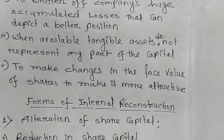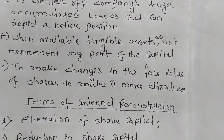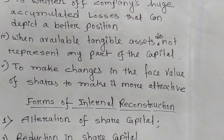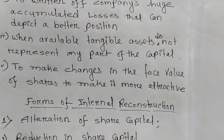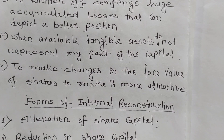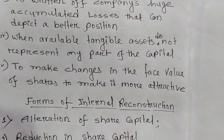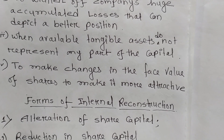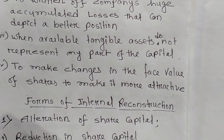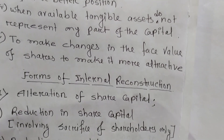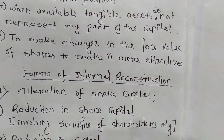The third situation is when the available tangible assets do not represent any part of the capital. Tangible assets are those which can be touched, seen, and stored. If such tangible assets do not represent the whole capital, then to get a return on capital, internal reconstruction is applied.